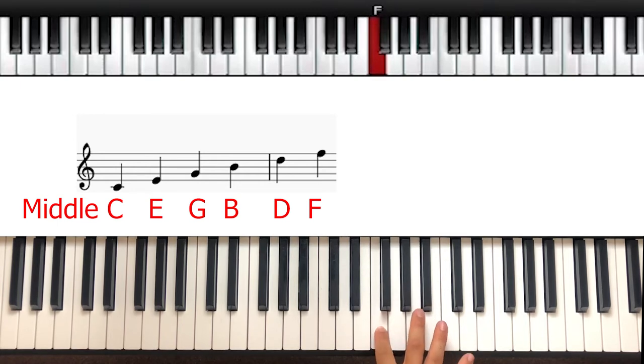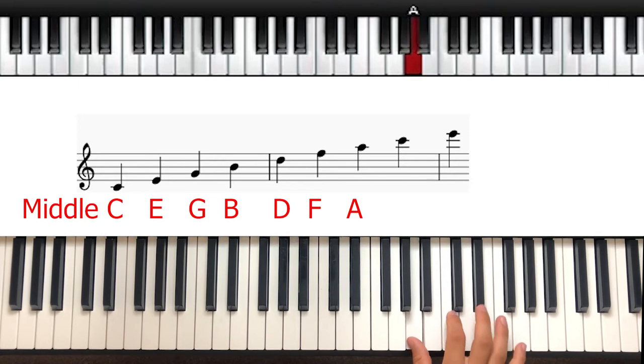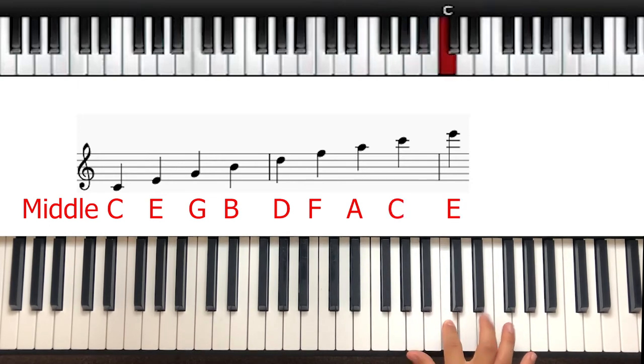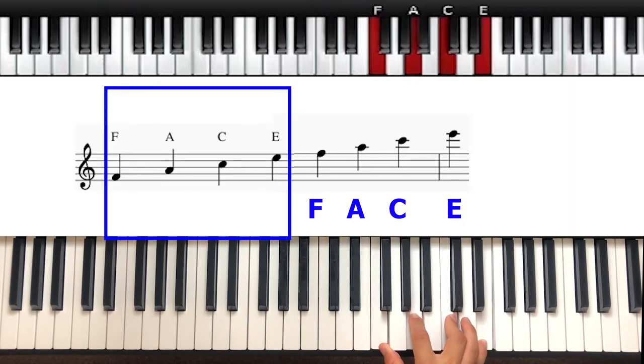So now when we go above F we have to put in the ledger lines. We start with A, C, and E, which spells FACE just like when you go through the spaces in the treble clef.